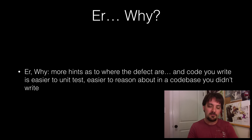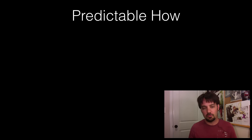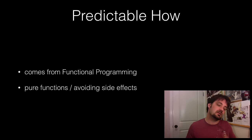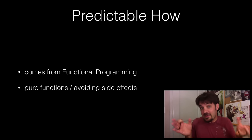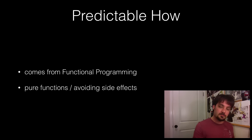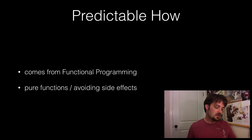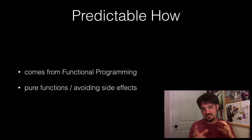The code that you do write is easier to unit test. It requires a lot less time and effort, a lot less code to write, and it's easier to reason about in a codebase you didn't write. So predictable how? What does that mean? It means it comes from functional programming — being mathematical-based constructs that are predictable. Mathematical equations are predictable. One plus one is two. We know for the most part math is universal. It works. Same in programming: if we write something that's a mathematical type of equation like algebra, it's a little more predictable.